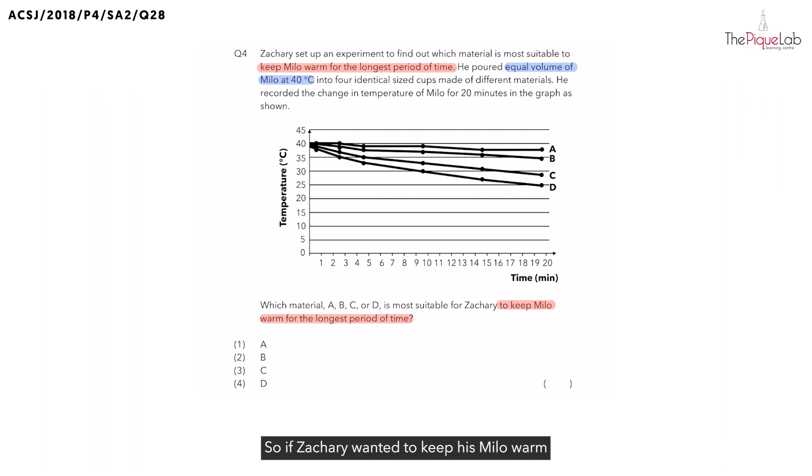So, if Zachary wanted to keep his Milo warm for the longest period of time, this means, do we want the hot Milo to lose heat the fastest or the slowest? We want the hot Milo to lose heat the slowest. So, let's write this down. The hot Milo would lose heat the slowest.